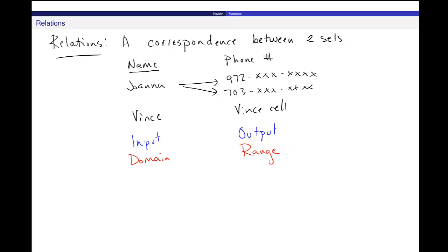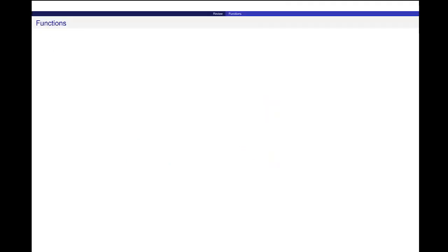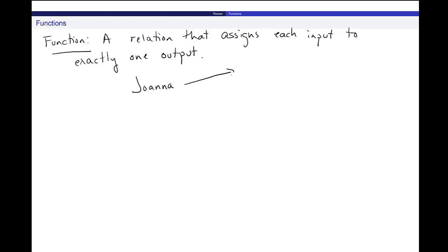So we have that kind of set up for a relation, any sort of correspondence between two sets. When we move down to functions, a function is a relation, a correspondence between two sets, that assigns each input to exactly one output. So our example above was not a function because you saw my name, Joanna, being assigned to two different outputs, my cell number and my work number. So that is set up right there where my input is going to my cell and work, means that this is not a function.